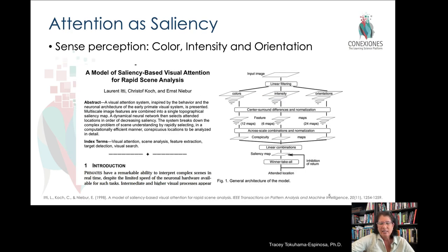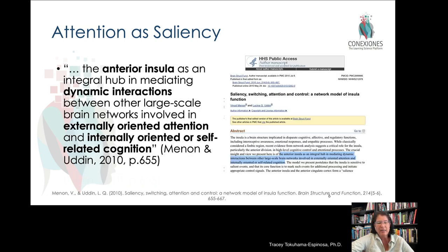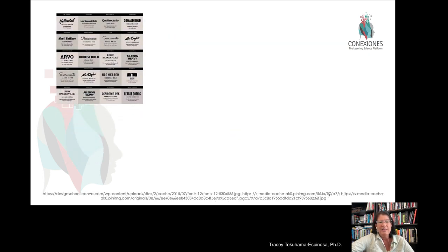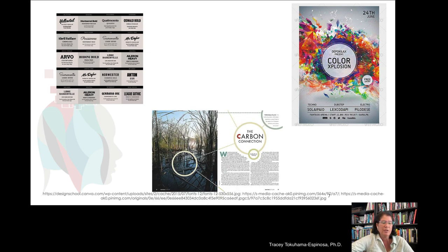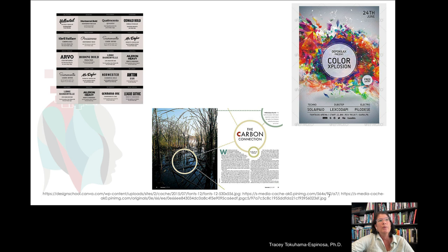If we look at attention and saliency, there's a lot going on in the brain, but based on sensory perception — in vision, things like color, intensity, and orientation — those things can change the way our brain pays attention. This involves things like the interior insula and other parts of the brain that work with the visual system to detect things that stand out from the norm. For example, if you're a graphic artist, different types of typeface, color combinations, or the way we use arrows and circles all hone in on attentional triggers in our environment.